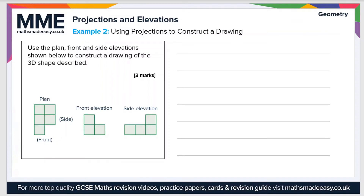Let's look at a second example — this one's a bit trickier and requires more 3D perception, which is a skill you'll need to practice for exams. The question says: use the plan, front, and side elevations shown below to construct a drawing of the 3D shape. So we have the plan (top-down view), the front elevation, and the side elevation on the right.